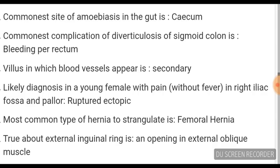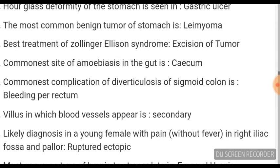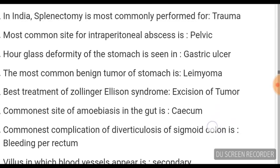The likely diagnosis in a young female with pain in the right iliac fossa and pallor is ruptured ectopic pregnancy. The villus in which blood vessels appear is secondary villus. The commonest complication of diverticulosis of the sigmoid colon is bleeding per rectum. The commonest site of amoebiasis in the gut is the caecum.